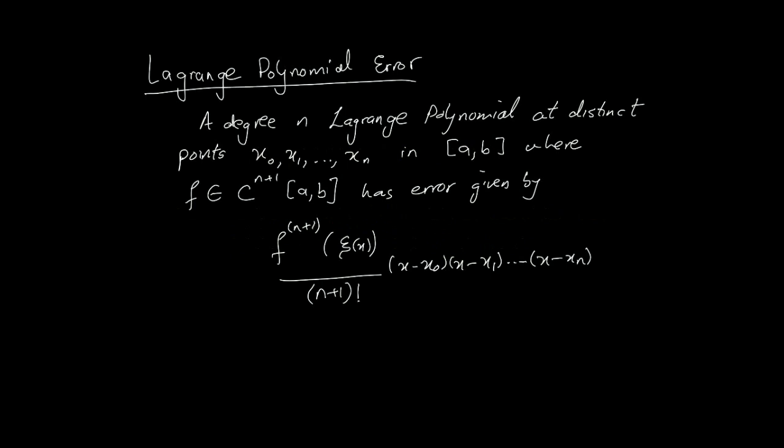So, Lagrange polynomial error. What we mean by that is a degree n Lagrange polynomial at distinct points, the data we've been using x0 to xn, n plus 1 data points in some range of values from a to b, where we're approximating using the Lagrange polynomial. Function f is being approximated using the Lagrange polynomial. So f needs to be C^(n+1), that means continuous n plus 1 derivatives on the interval a, b.